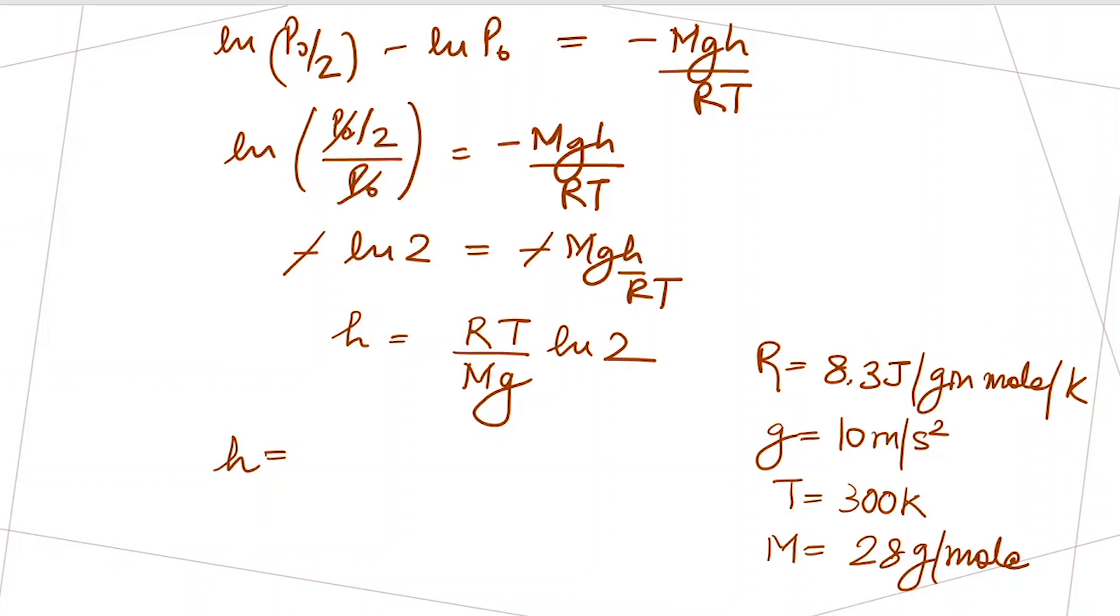So the height is RT over mg times log 2. Let's put the values. We are given the R value, we will take g to be 10 meter per second squared, the temperature is 300 Kelvin, and the molecular weight is 28 gram per mole because it is pure nitrogen.